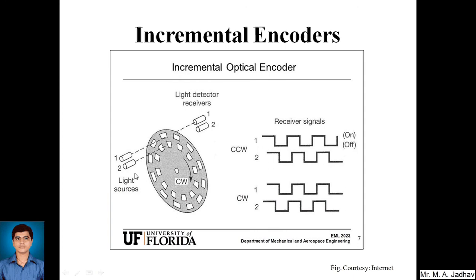In this figure, instead of A and B, we are going with one and two light sources and two light detector receivers. As the disc rotates, we have two rows of segments, transparent and dark segments. When the light is passing through the transparent segment for light number one and receptor number one, two is having the dark segment. So we will get only pulse for one, then for two as it rotates in counterclockwise direction.